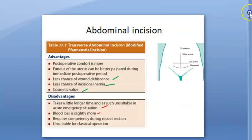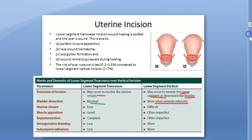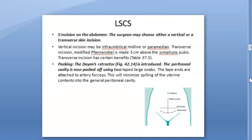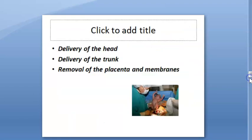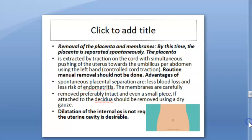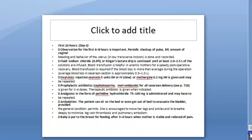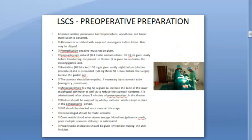So to summarize: the Pfannenstiel and related incisions are abdominal incisions, while the transverse, vertical, and J-shaped incisions refer to uterine incisions — the latter two involving the upper segment should be avoided. In the next video we will cover preoperative preparation for lower segment cesarean section, how to incise the abdomen, how to make the uterine incision, the steps of LSCS, delivering the head and trunk of the baby, removing the placenta, suturing, and postoperative care.